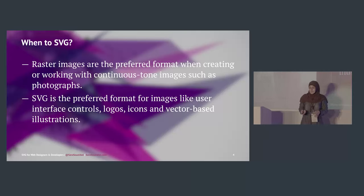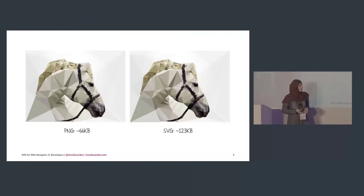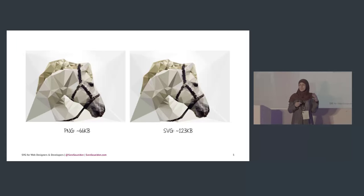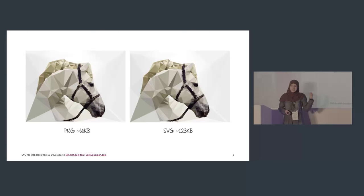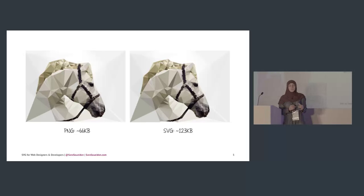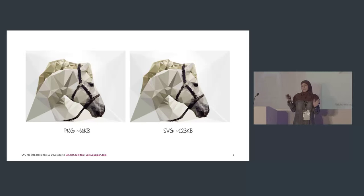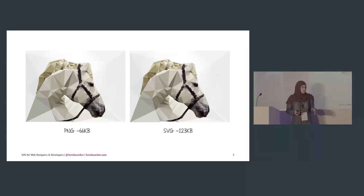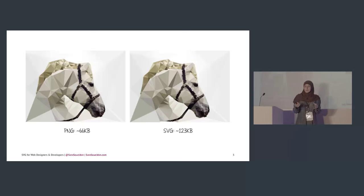There are some exceptions. For example, an image created in Illustrator and made up of vector shapes is a perfect SVG candidate, but if the PNG is almost half the size of the SVG, don't use SVG — use PNG and provide different versions for retina screens using the picture element and source attribute. The general rule of thumb is: depending on the type of image, choose whichever format is best.